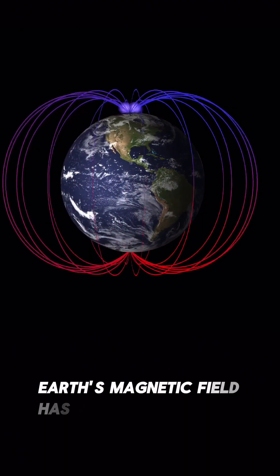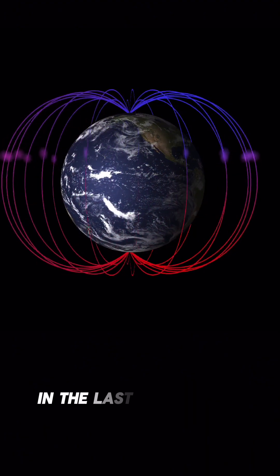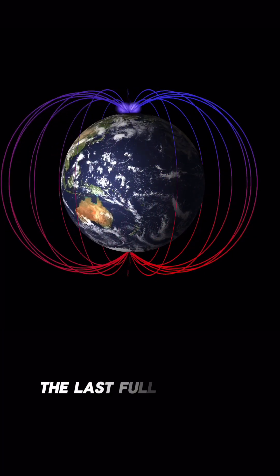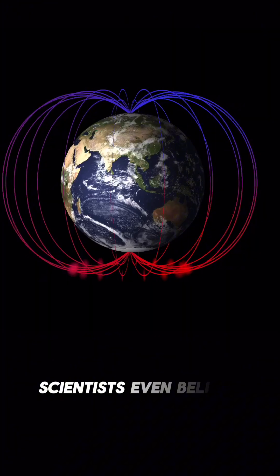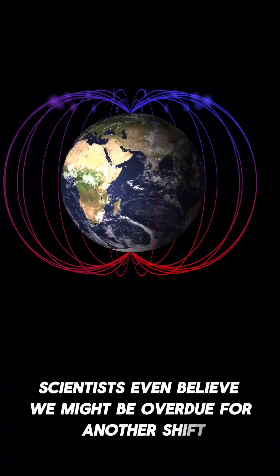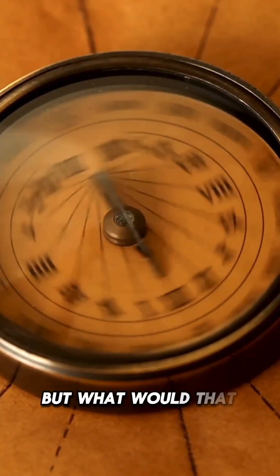Earth's magnetic field has reversed hundreds of times in the last 100 million years. The last full flip was about 780,000 years ago. Scientists even believe we might be overdue for another shift. But what would that actually mean for us?